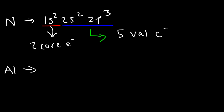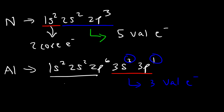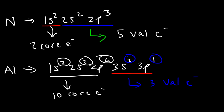Now let's consider aluminum. The electron configuration is 1s2, 2s2, 2p6, 3s2, 3p1. The s sublevel can only hold two electrons, p can hold up to six electrons, and d can hold up to ten. Looking at the highest energy level of aluminum, which is the third energy level, there are three electrons there — two plus one is three. So aluminum contains three valence electrons. All the others represent core electrons: two plus two plus six, so aluminum contains ten core electrons. That's how you identify valence and core electrons using the electron configuration.